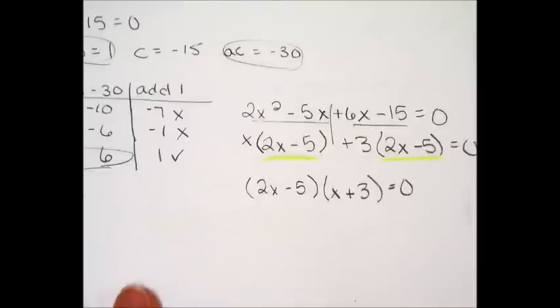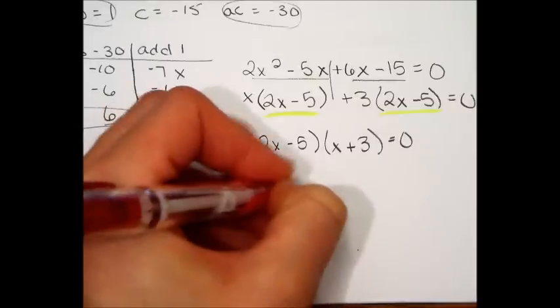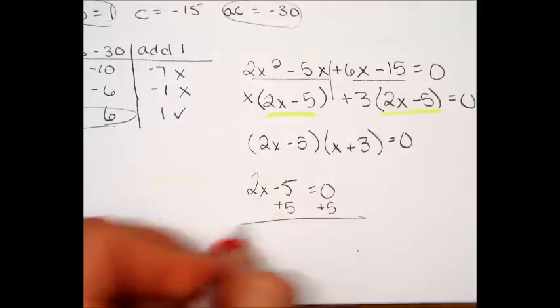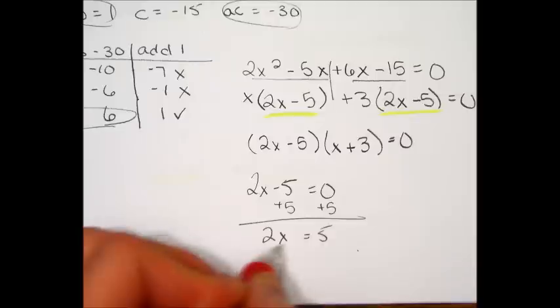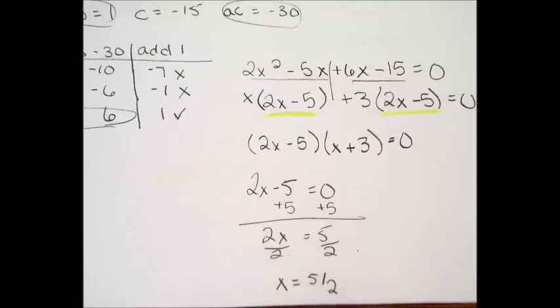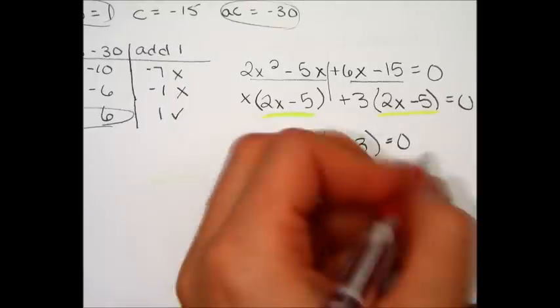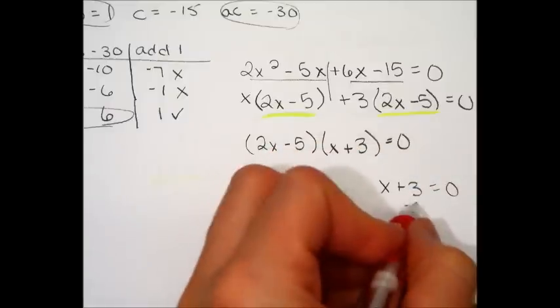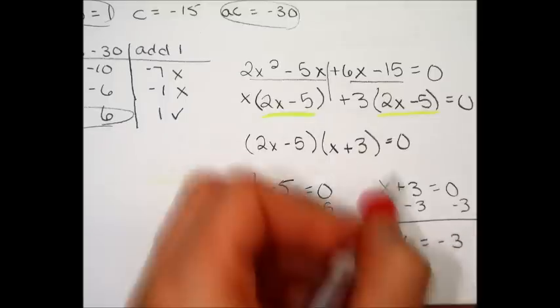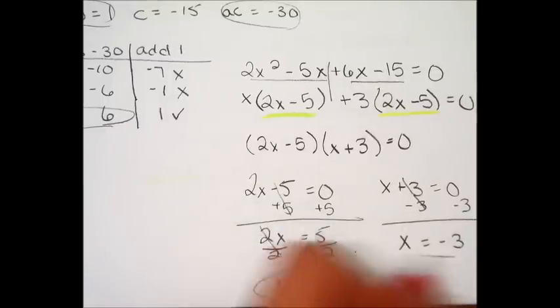Remember that we actually have to go a little further and solve now. You take the first binomial, 2x minus 5, and you set it equal to 0. And now you solve. Add 5, divide by 2, reduce. x is 5 halves. Do the same thing with the other binomial. Take x plus 3, set it equal to 0, and solve. Minus 3, minus 3. x equals negative 3. There are your two answers.